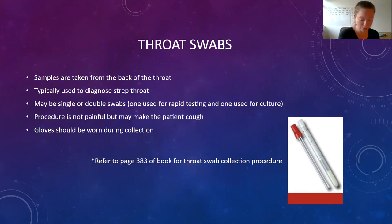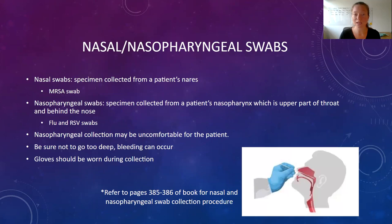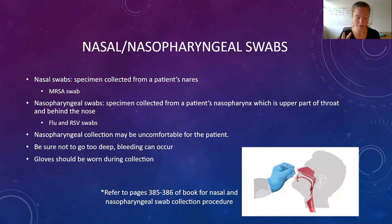Page 383 in your textbook goes over the step-by-step procedure for a throat swab. We've also got nasal and nasopharyngeal swabs — two different things. A nasal swab takes samples from the nose, just inside the nares. You might be testing for something like MRSA in the nares — that's an antibiotic-resistant staph infection. These swabs also go into a container with a transport media that helps keep those microorganisms moist and viable. This is on page 385 in your textbook.